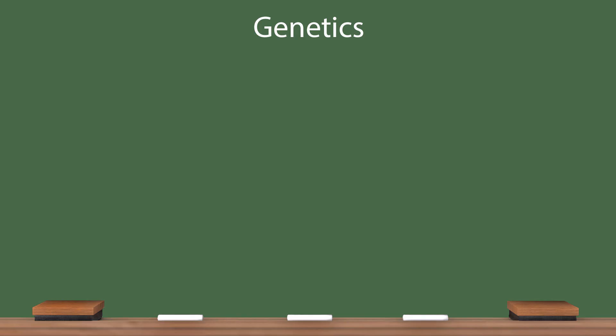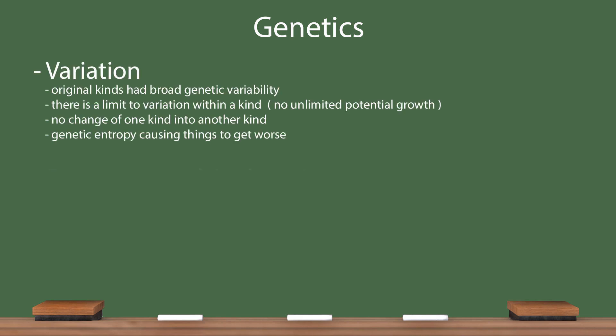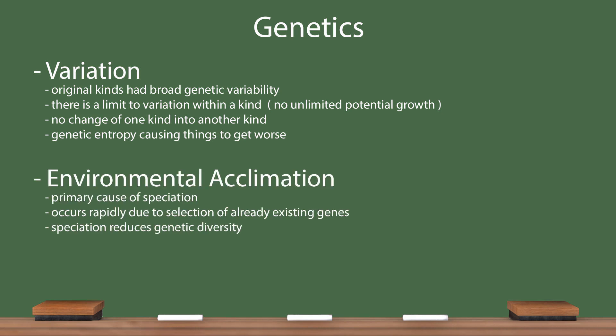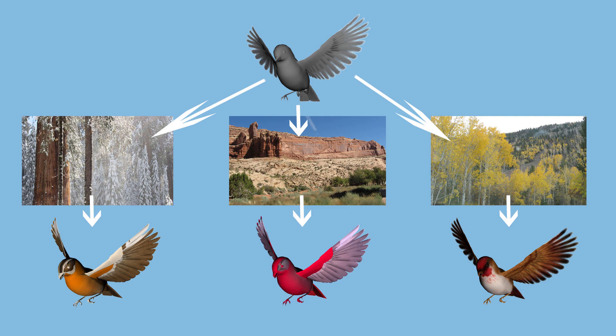The third section of the model I would like to look at is genetics. The original kinds had a wide range of genetic potential, which allows for speciation, but still limits the amount of change that can occur. Over time, the genetic code is building up an increasing number of problems. The primary cause of genetic reduction is speciation through environmental acclimation, which reduces the available diversity. As the computer bird kind settles in different habitats, the surface features of the bird will change with the genetic potential to acclimate to that environment, and thus speciation begins, and happens rapidly at the beginning.